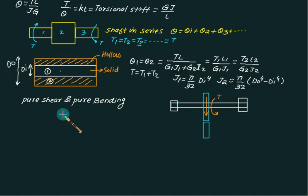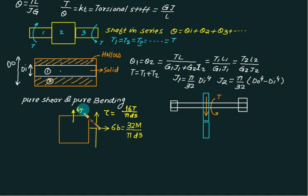In this case, the state of stress: we have σ_x is same as σ_b equals 32M by πd³, and we have a shear stress τ_xy equals 16T by πd³. There is no normal stress along the y direction, so σ_y equals zero.